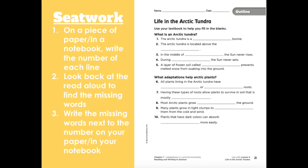Now onto our seat work. On a piece of paper or in your notebook, write the number of each line. Then look back at the read-aloud to find the missing words. Write the missing words next to the number on your paper or in your notebook. Seat work was our final task for today. See you tomorrow.